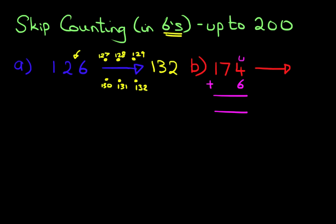Start on the right-hand side, as always, the units. What is four plus six? You know that from your number bonds. Four plus six is ten. Put one here and zero here. Now, we're adding the tens. We've got seven plus zero plus one. Don't forget the one. It becomes eight. And the hundreds just remains one.